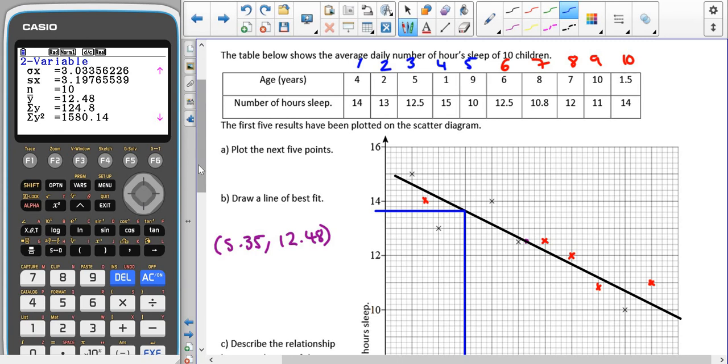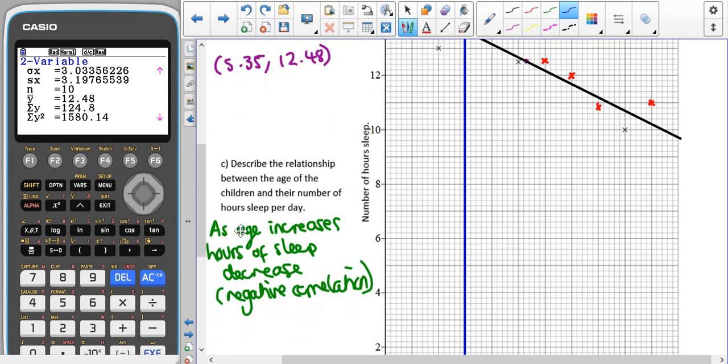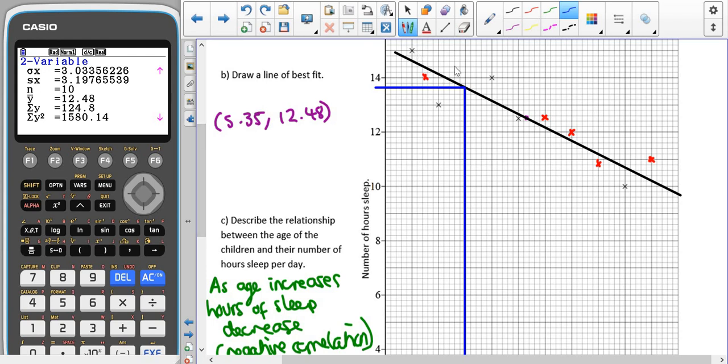So this time they would probably expect us to do that. However, like I said before, again, we are going to look at the proper way that we can calculate these lines of best fit later on. So then we had to describe the relationship. So as age increases, the hours of sleep decreases. And again, that's a negative correlation this time. Last time it was positive. This time it's negative.